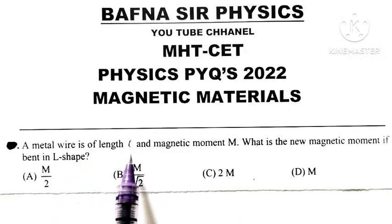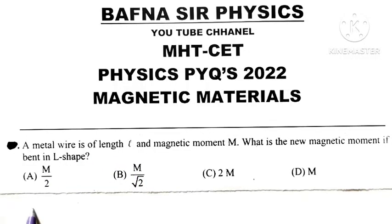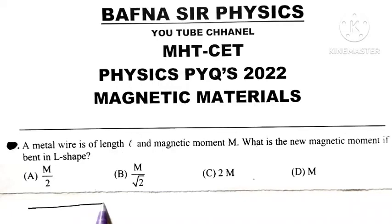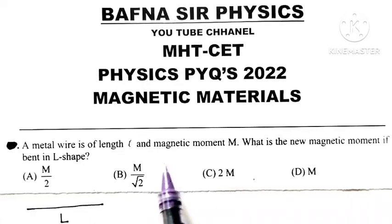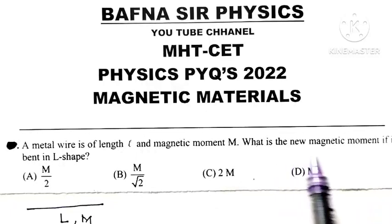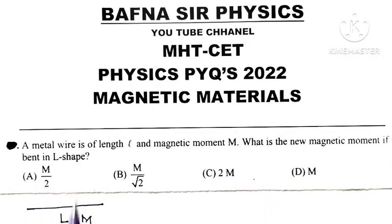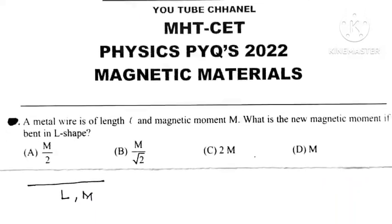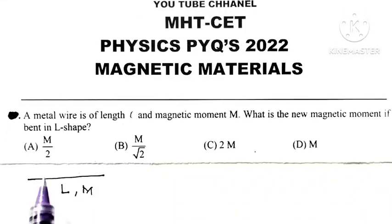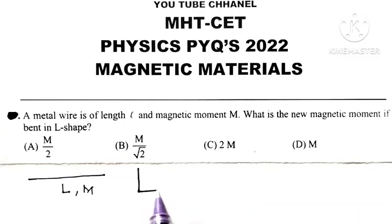A metal wire of length L and magnetic moment M. What is the new magnetic moment if it is bent in L shape? Suppose that this metal wire of length L is bent into L shape at its center.